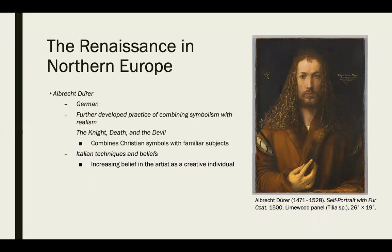Albrecht Dürer is another Northern European Renaissance artist — German — who further developed combining symbolism with realism. This self-portrait looks very much like a portrait of Jesus, and many have made that observation. Details like the hand placement, the hair, and the triangular shape of the head all resemble iconographic portraits of Jesus, though Dürer claims it's just a self-portrait. His skill derives from Italian Renaissance techniques and beliefs.